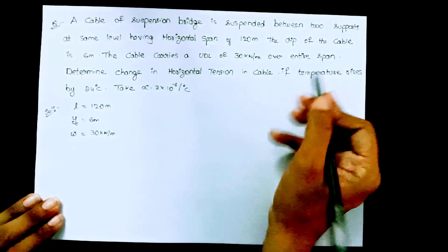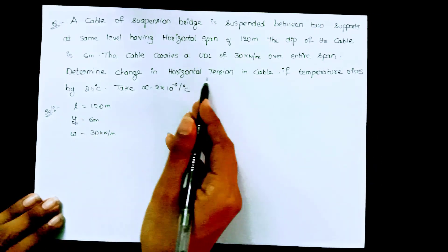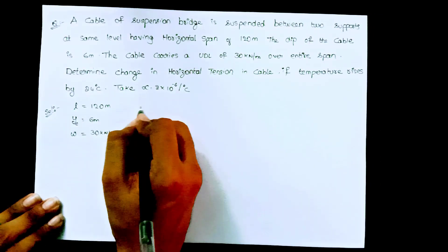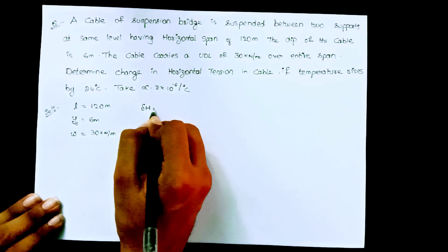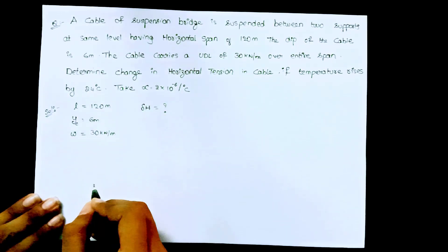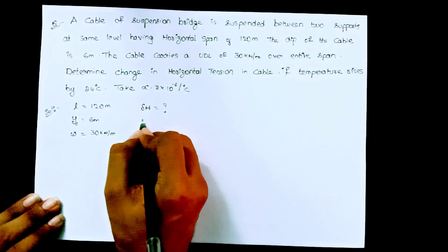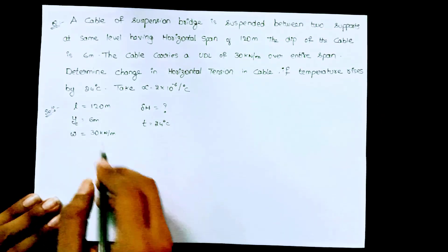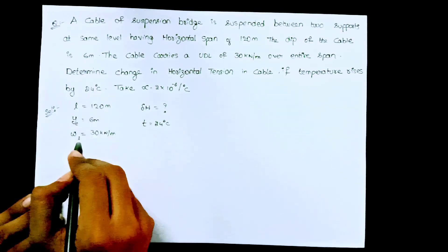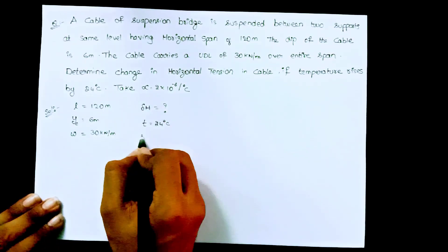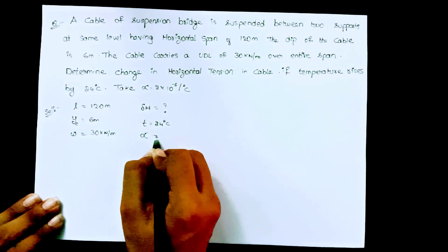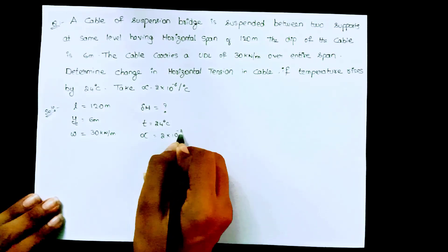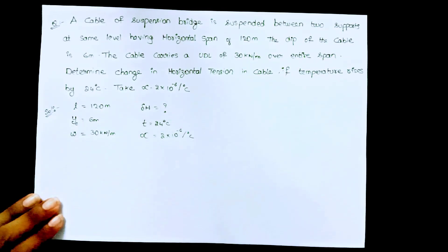Determine the change in horizontal tension in the cable if temperature rises by 24 degrees Celsius. It is also given that coefficient of thermal expansion is 2 into 10 power minus 6 per degree Celsius. This is all about the given data.